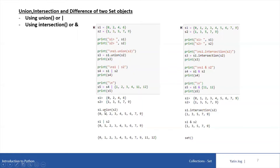If I print S3, you can see in the output that S3 contains all the elements of S1 as well as S2. S1 has all the even numbers and S2 has all the odd numbers, so S3 has all the numbers between 0 to 9. You can also do union of two set objects using the OR symbol. If I say S4 = S1 | S2, the meaning is the same — it copies all elements of S1 into S4 and then adds all elements of S2. If I print S4, you get the same output, 0 to 9.